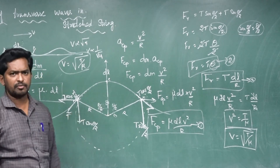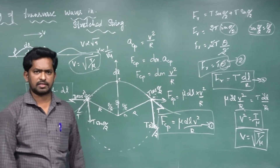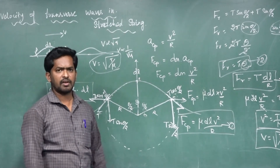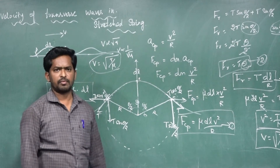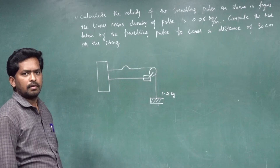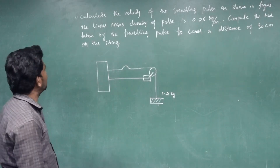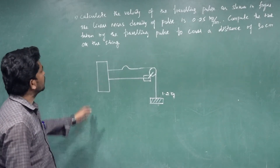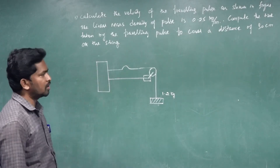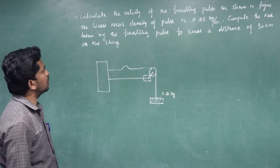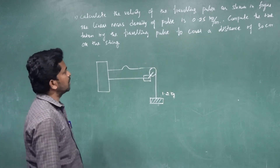The velocity of the pulse or transverse wave mainly depends on tension. V is directly proportional to the square root of tension, and V is inversely proportional to the square root of linear mass density. Also, the velocity of the pulse is independent of the shape of the pulse. This is the velocity of transverse waves in a stretched string: V equals square root of T divided by mu.